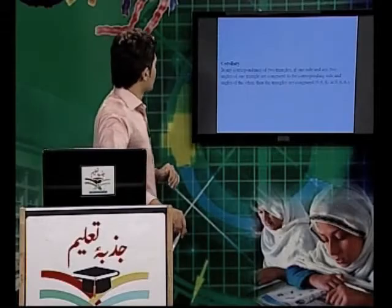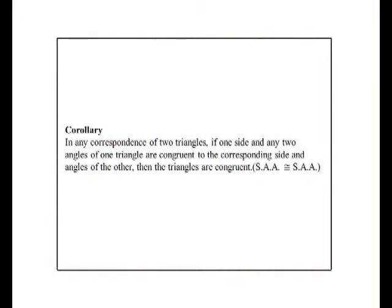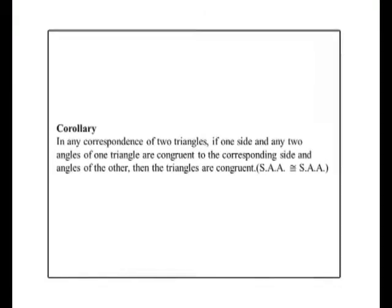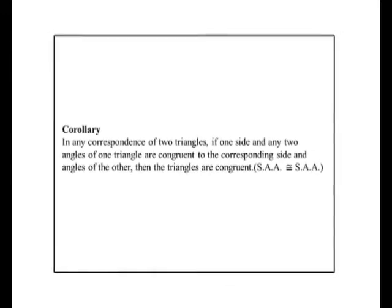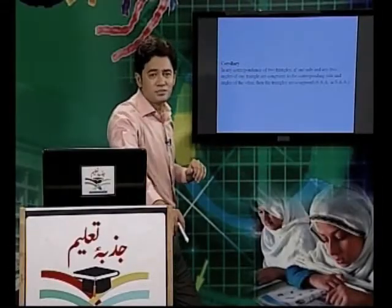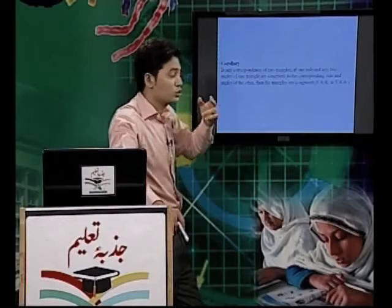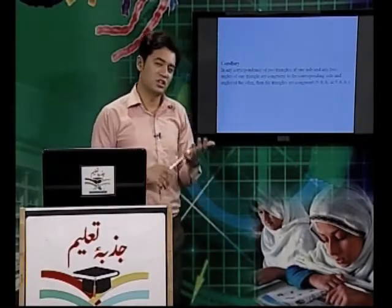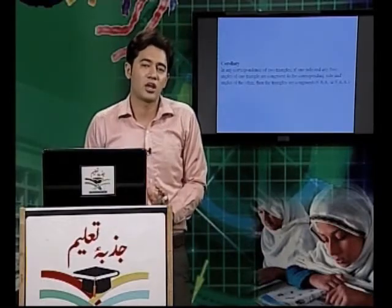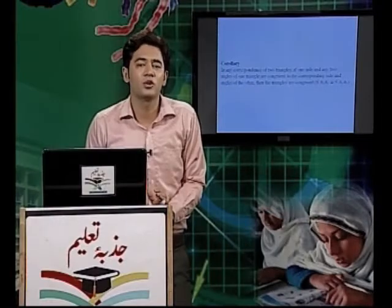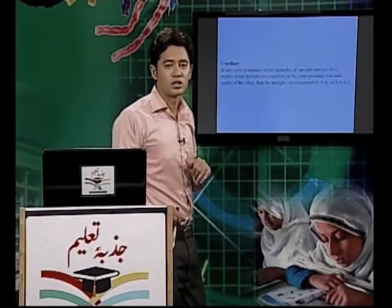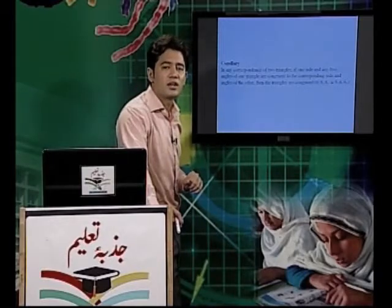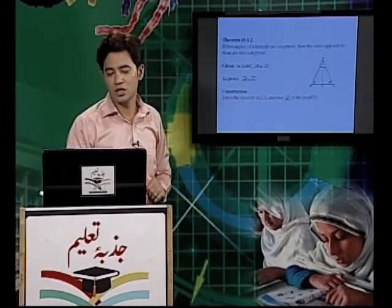اس کے بعد ایک اور information: In any correspondence of two triangles, if one side and any two angles of one triangle are congruent to the corresponding side and angles of the other, then the triangles are congruent۔ ابھی تک ہم discuss کرتے آ رہے تھے تین sides، تین angles، پھر دو sides اور ایک angle، اور اب ایک side اور دو angles۔ اگر ایک side اور دو angles آپس میں congruent ہوں تو وہ triangles آپس میں congruent ہو جاتی ہیں۔